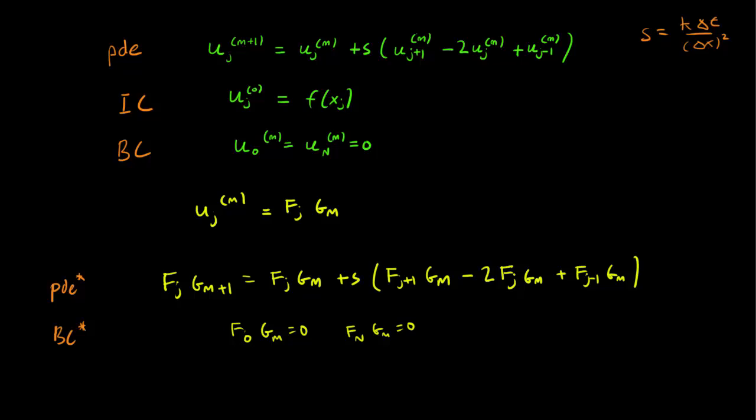But if g_m is 0 for all m, then our u solution is just going to be 0. And the 0 solution is not very interesting, even though it does technically solve the problem. So we can assume that g_m is not 0 for every m. And this means we can divide by g_m. And this means that f_0 and f_n are both 0. So those are our boundary conditions.